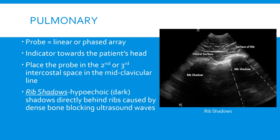The first thing I want to talk about is rib shadows. Rib shadows are hypoechoic or dark shadows that are directly behind the ribs. The reason you see these shadows is that the ribs are so dense that the ultrasound waves can't penetrate them, so all you see is a dark shadow behind the ribs.